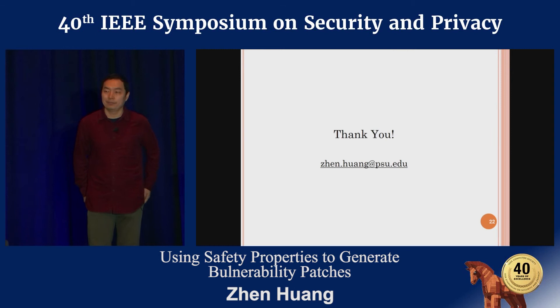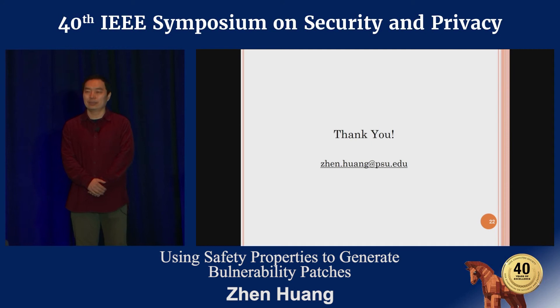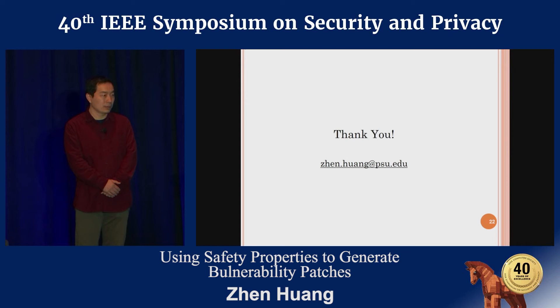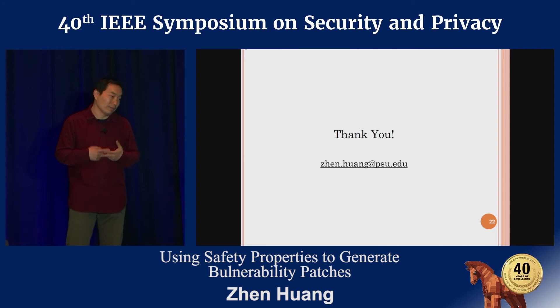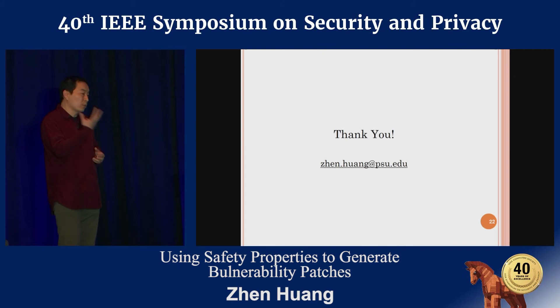Do we have any questions from the audience? We actually have a lot of time left. So one thing I'm not quite sure I understand is what exactly is the input to your system — some form of expression of a safety property? Yes, that's right. So we require the code of the targeted program, and we also require one input to trigger the vulnerability, along with the safety property. So that's basically three types of inputs to the system.